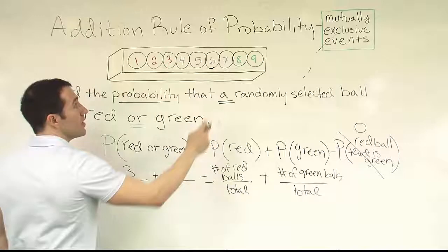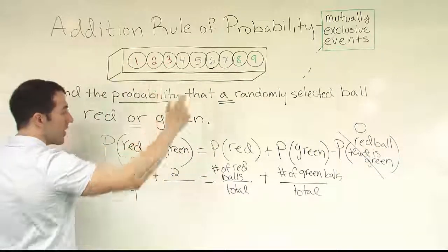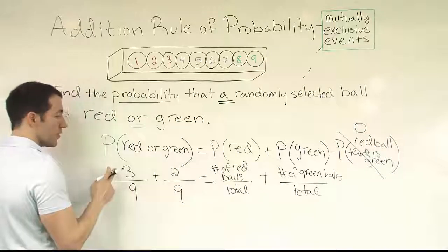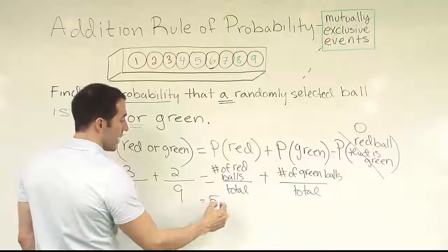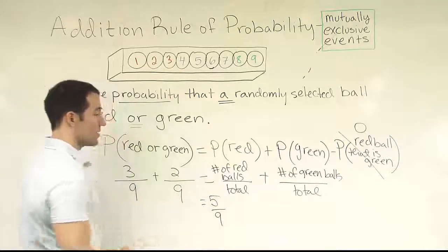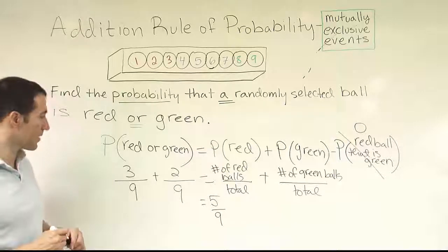Number of green, it's two green balls in the box. How many total do we have? Nine total. Three plus two gives you five. We have a nine at the bottom. The final result is five ninths for the decimal .5555 repeating on and on. That's it.